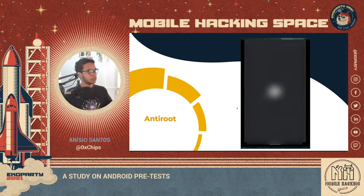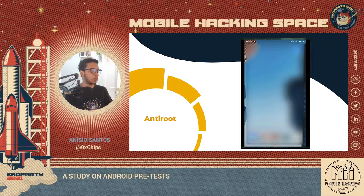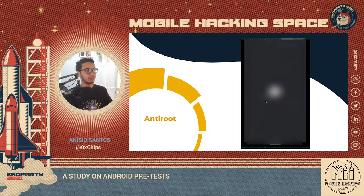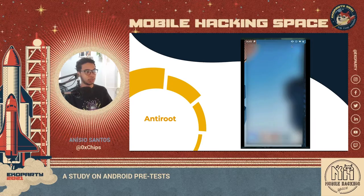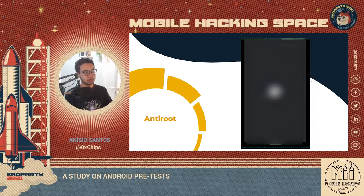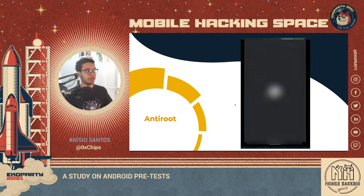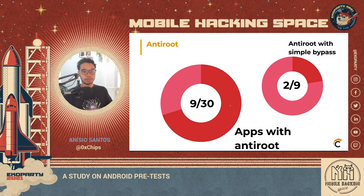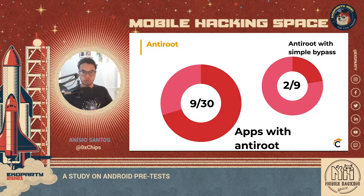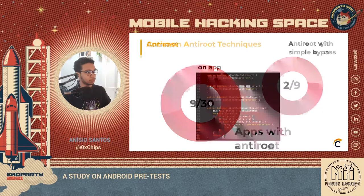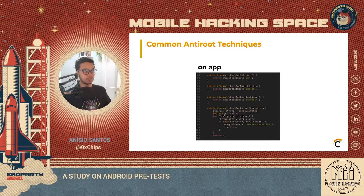Moving on to anti-root detection, which is also a well-known feature. Here we have an application that opens and then detects it's running on a rooted device and just closes. This device is using Magisk — it's a real device. From the 30 applications, nine had anti-root detection, and two of those were easily bypassable with well-known free scripts and tools.